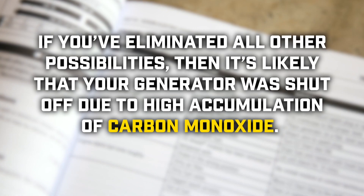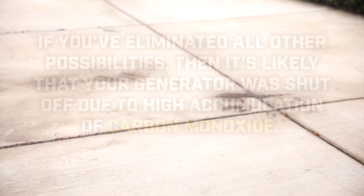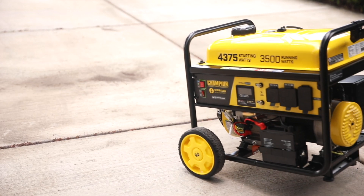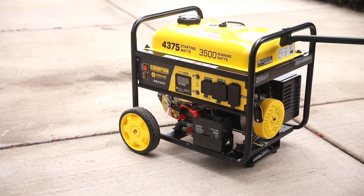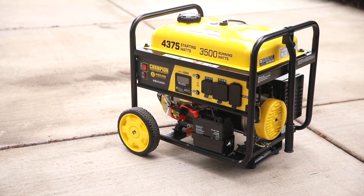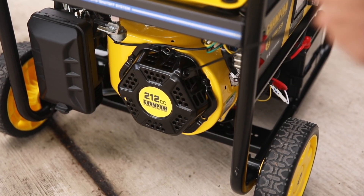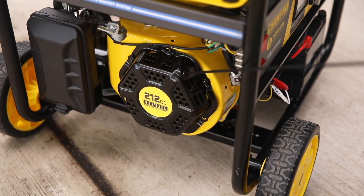If you've eliminated all other possibilities, then it's likely that your generator was shut off due to a high accumulation of carbon monoxide. Relocate your generator to a more open outdoor location with good ventilation away from all doors and windows before attempting to run your generator again.